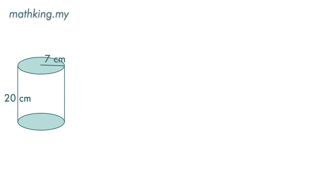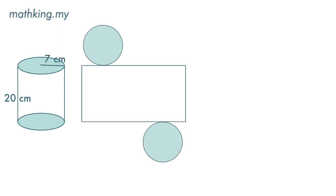Next, we want to find the surface area of this cylinder. This is the net of this cylinder. What we need to do is to add up the area of the two circles and the rectangle to get the surface area of this cylinder.